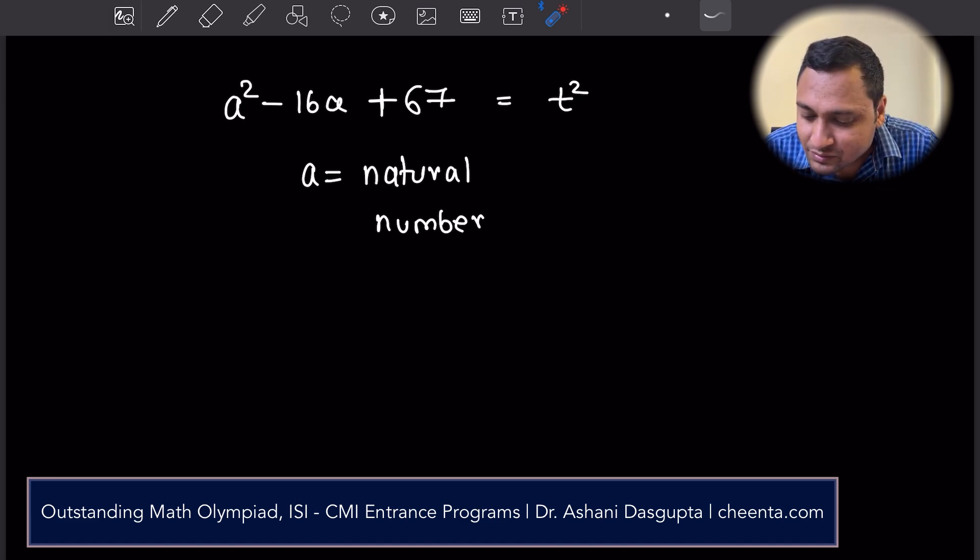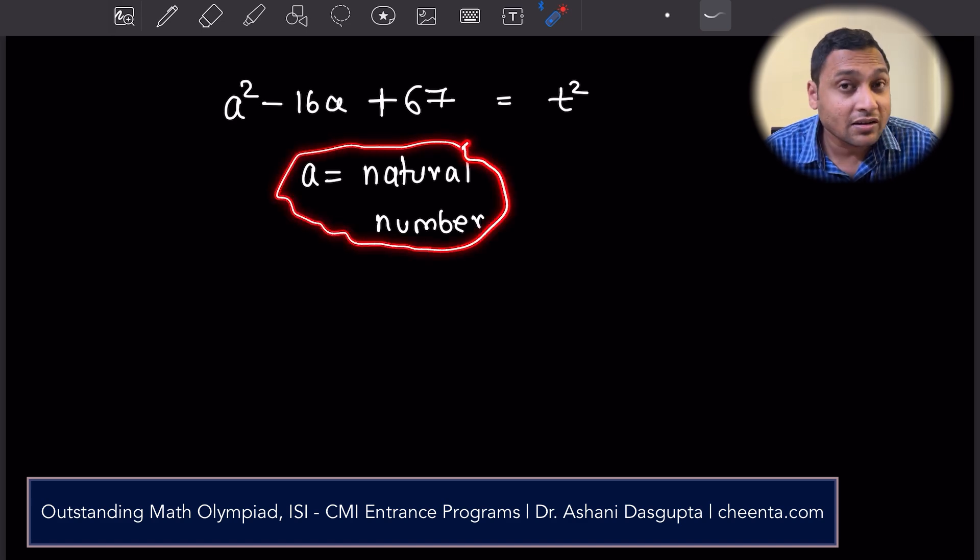The problem says that we need to find out all such natural numbers. Natural numbers means 1, 2, 3, 4, 5, 6.